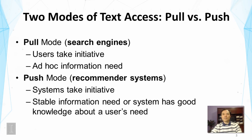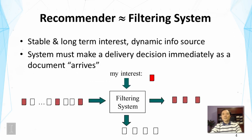Recommender systems are the main systems to serve users in the push mode, where the system takes initiative to recommend information to the user. This often works well when the user has a relatively stable information need and when the system has good knowledge about what the user wants. A recommender system is sometimes called a filtering system.